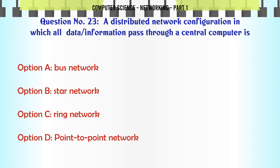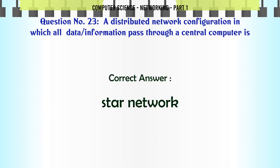A distributed network configuration in which all data information passes through a central computer is: A. Bus network. B. Star network. C. Ring network. D. Point-to-point network. The correct answer is: Star network.